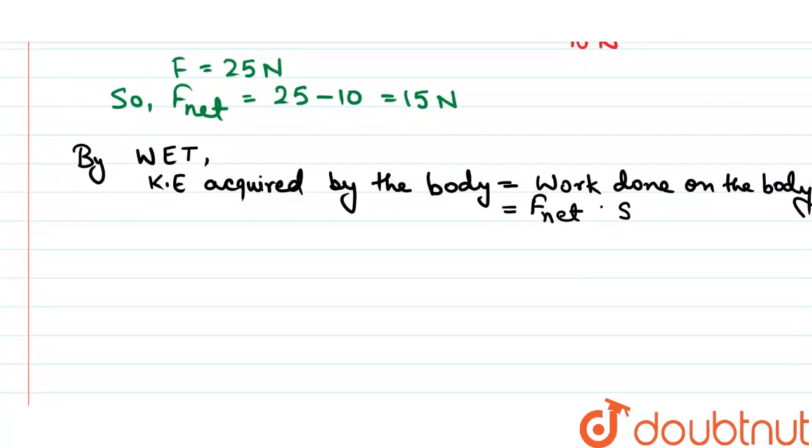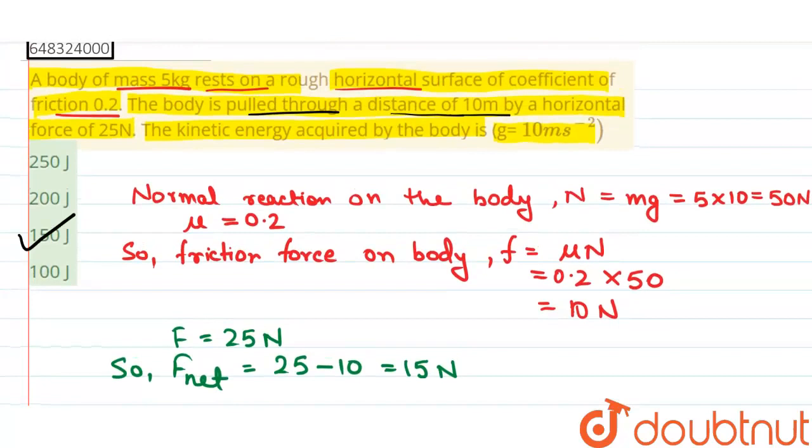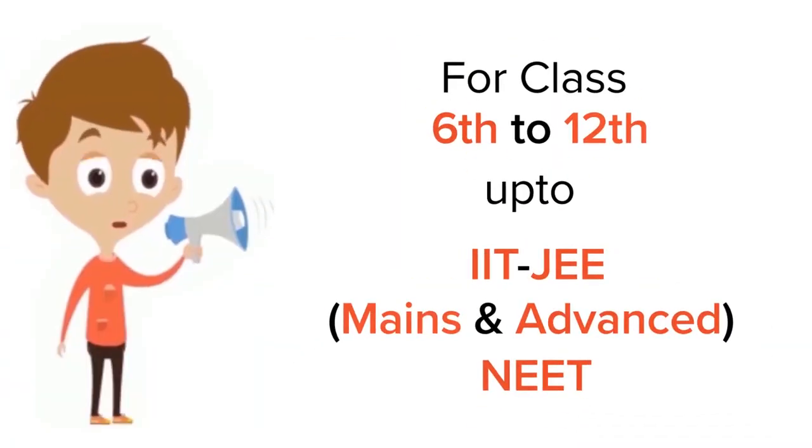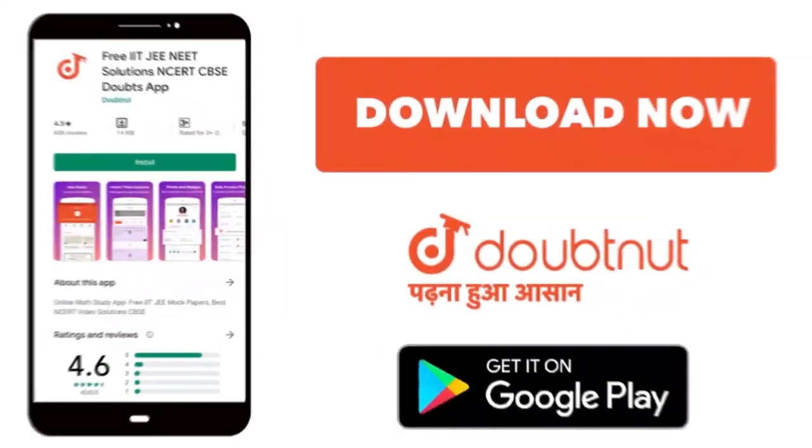So F net is 15 newtons and S equals 10 meters, so 15 into 10 which equals 150 joules. Hence, kinetic energy acquired by the body equals 150 joules and the correct option is option C. Hope you guys got the answer. For class 6 to 12, IIT JEE and NEET level, trusted by more than 5 crore students, download Doubtnut app today.